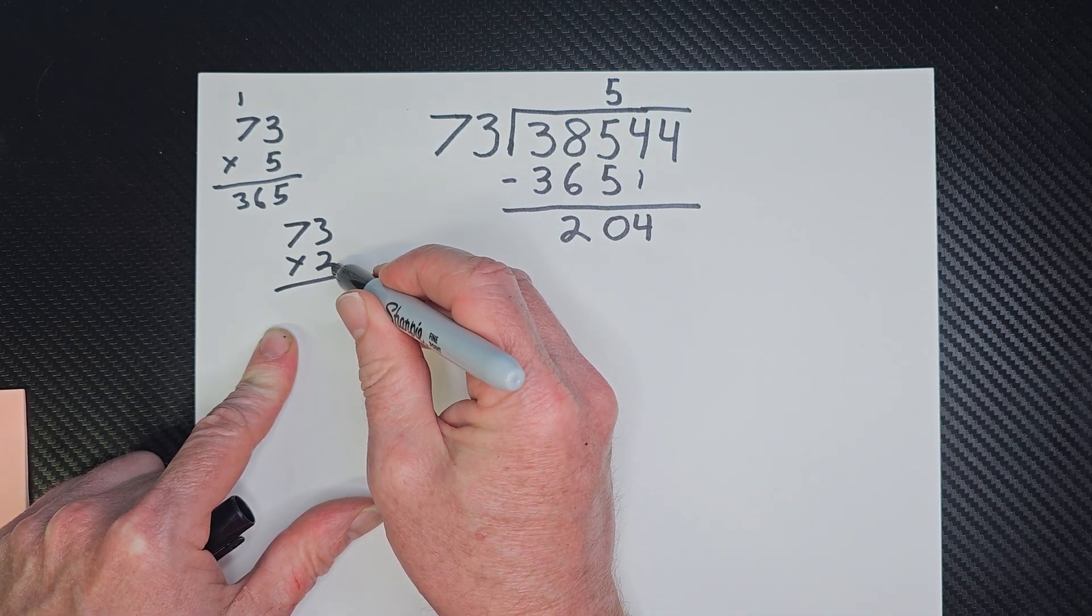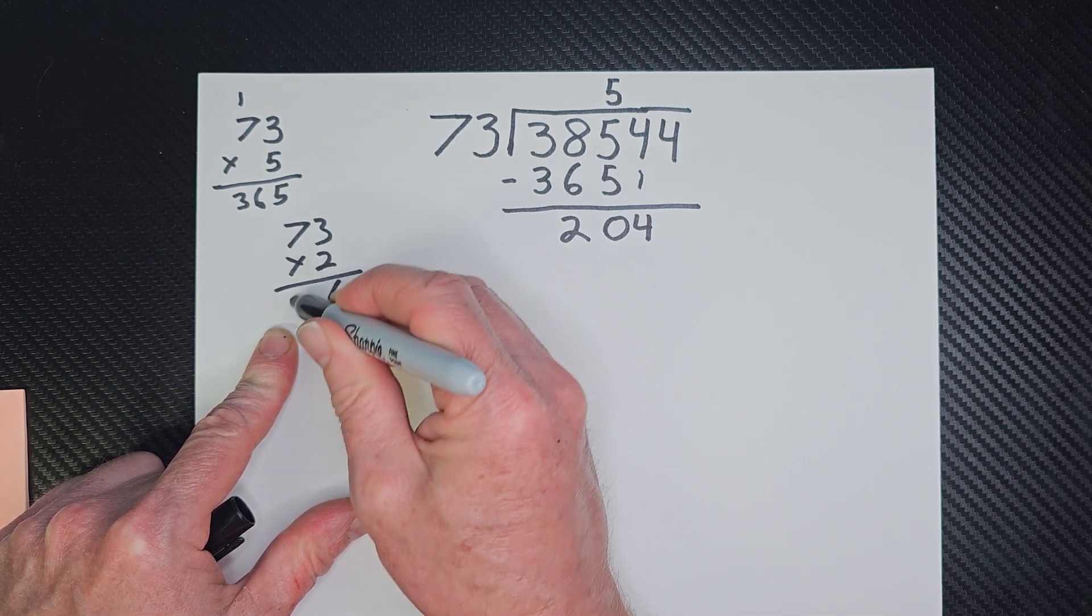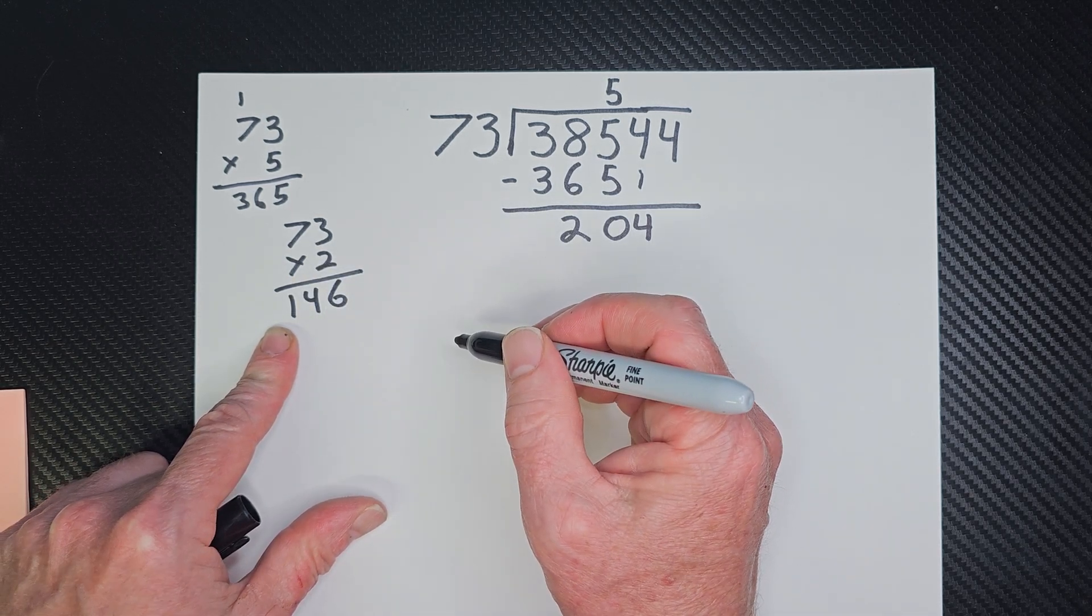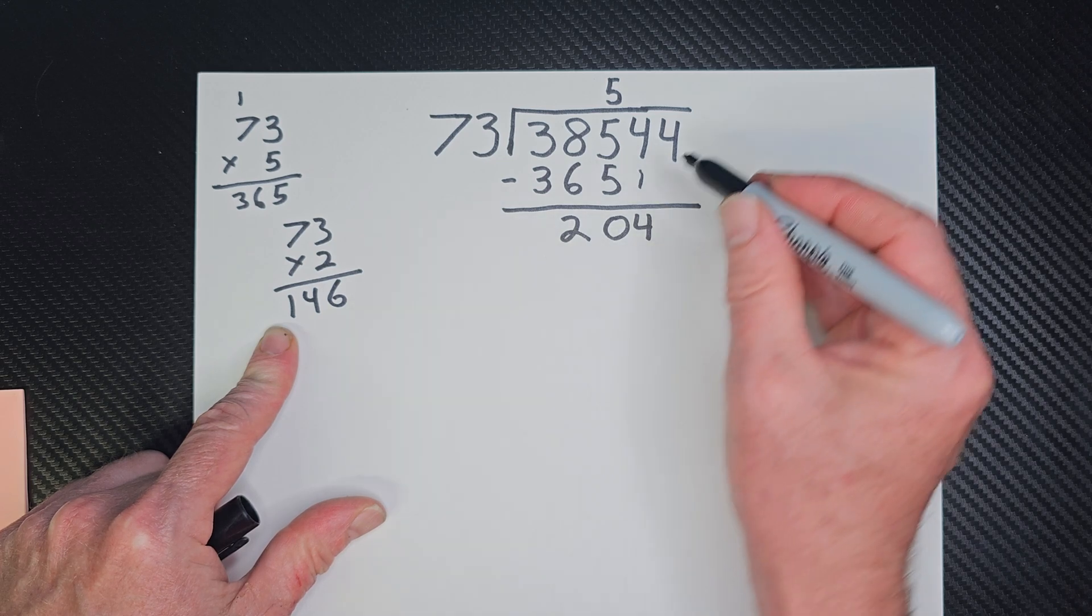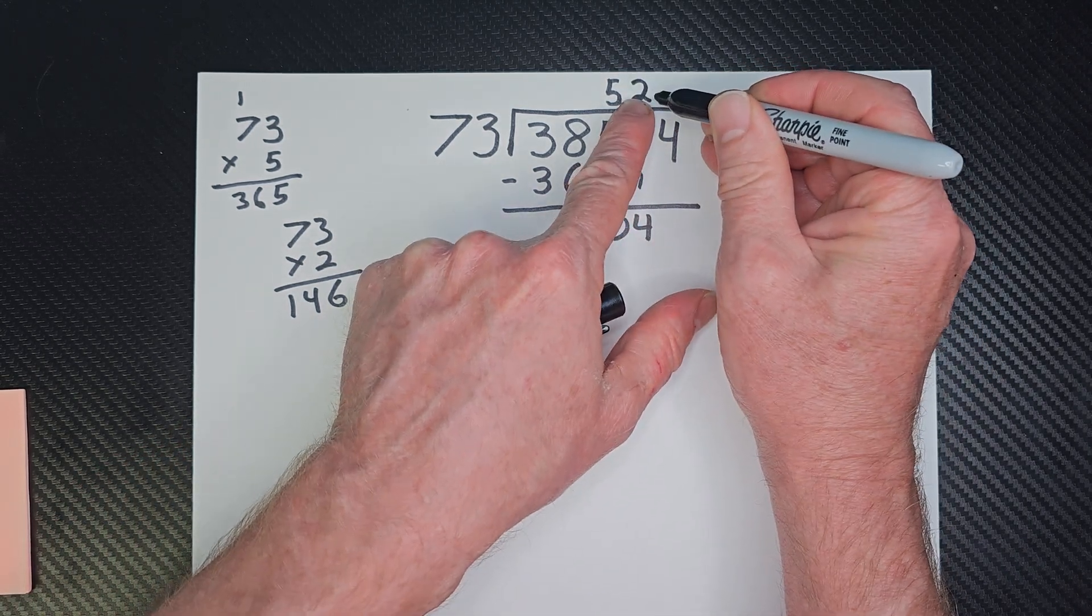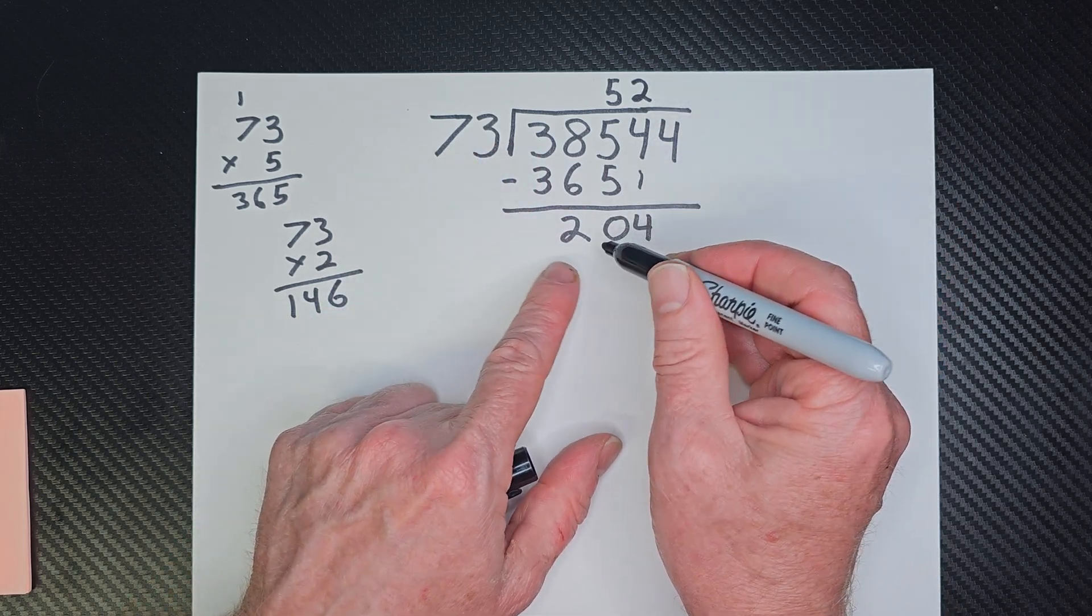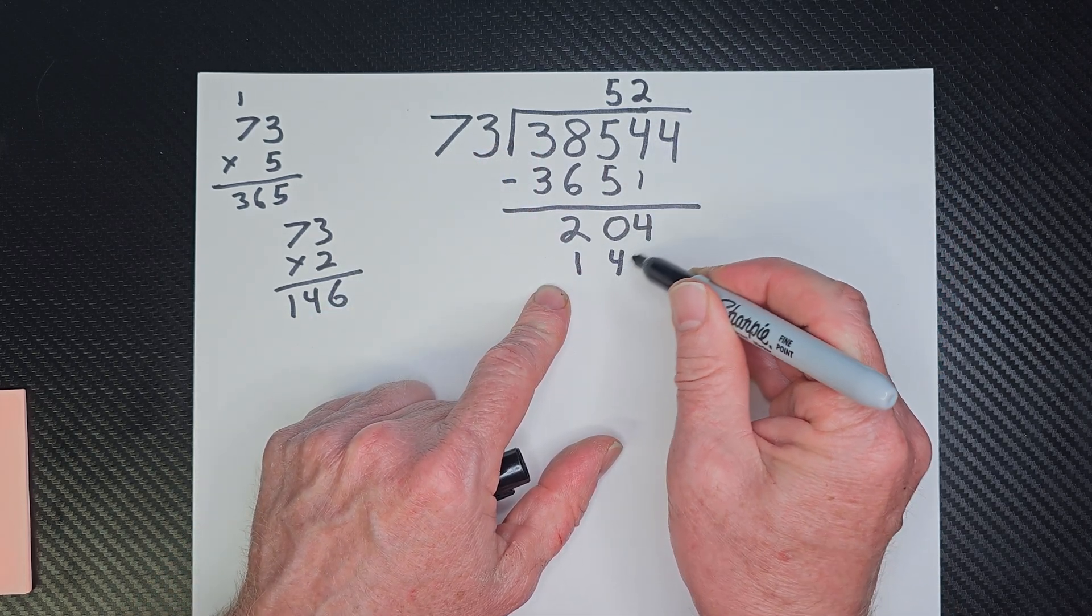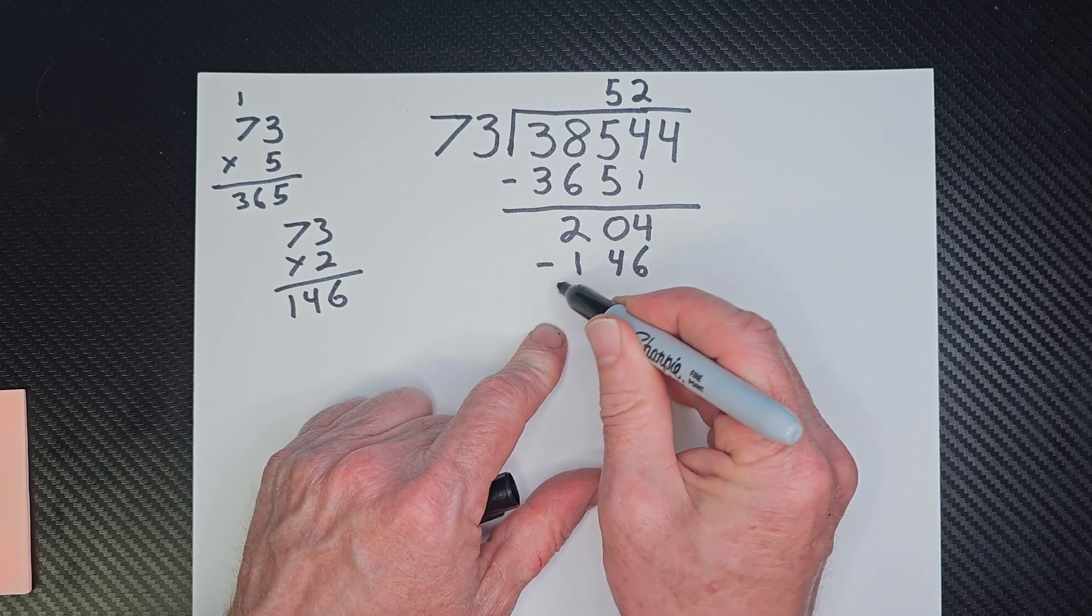So 3 times 2 would be 6. 2 times 7 would be 14. So 146. So now I'm going to put the 2 right here. So 2 times 73 would be 146. I'm going to go ahead and subtract that.